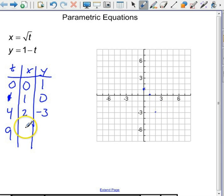And at t equals 9, x is 3, and y is negative 8. So 3, negative 8. And if we connect these, we get what looks like half a parabola.